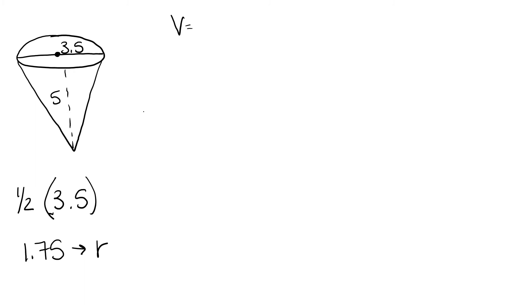We're going to use our formula v equals pi r squared h divided by 3. We start by plugging in our radius that we found, as well as our height, 5.